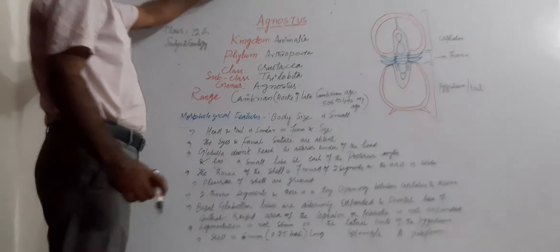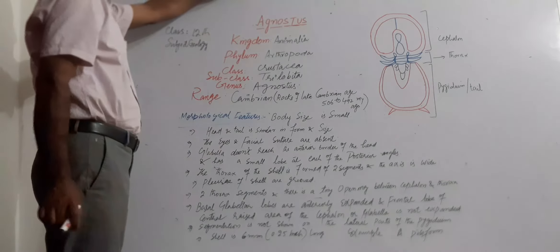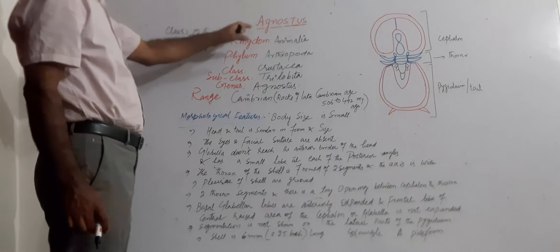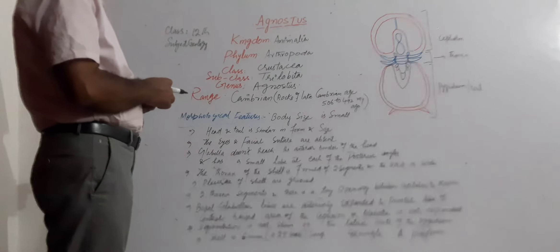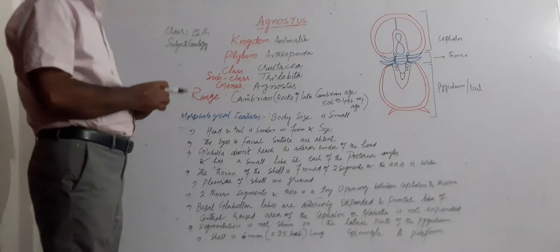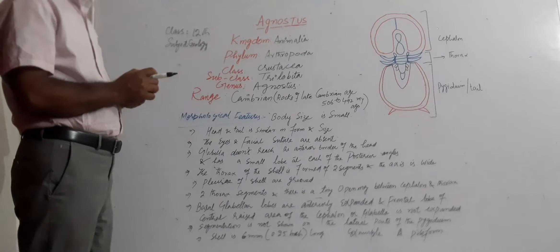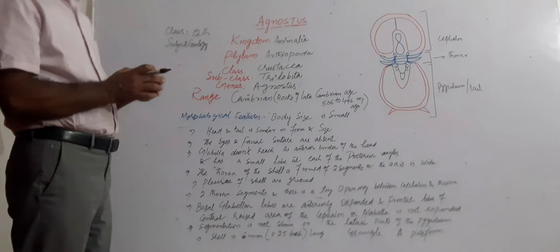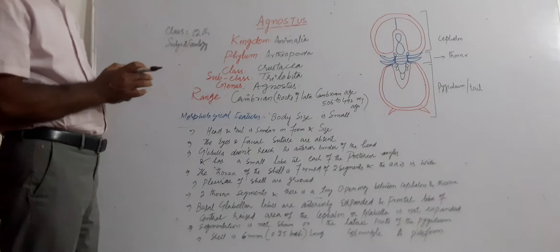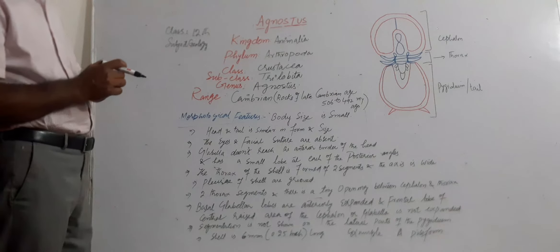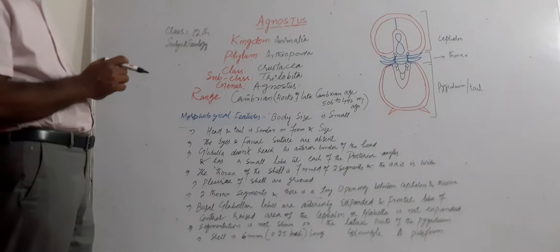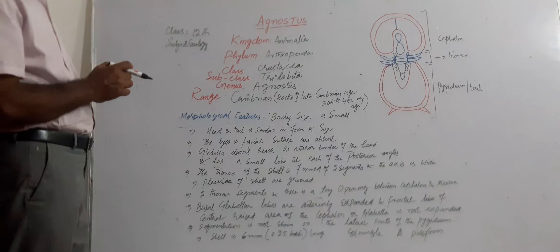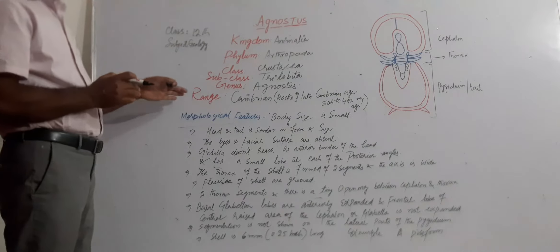Today we will try to know the features or the morphological features of the shell Agnostis. As you know, Kingdom Animalia, Phylum Arthropoda, Class Crustacea, while the subclass is Trilobita, genus is Agnostis. And we see the age or range is Cambrian.